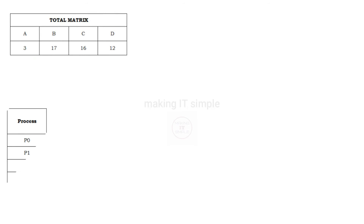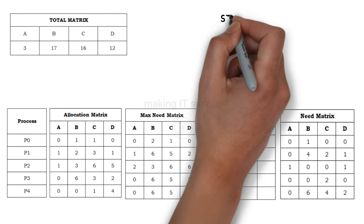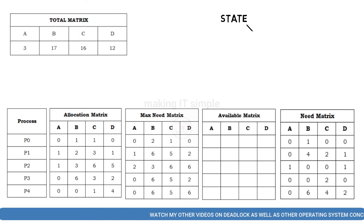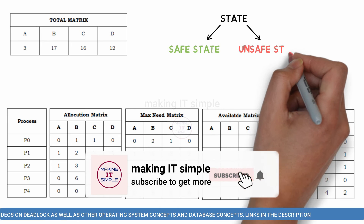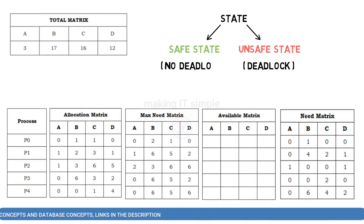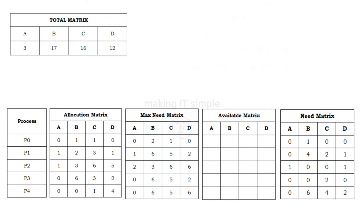These instances of all these matrices at a point of time is called a state. The banker's algorithm checks, after providing requested resources to the processes, whether the state remains in a safe state or an unsafe state — that is, will there be a deadlock or there won't be one. Now let us try to solve it and check whether we get a safe or unsafe state.